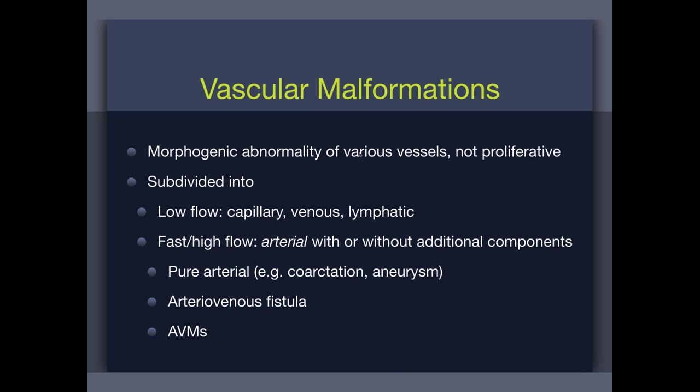AVMs are actually much rarer than venous and lymphatic malformations. In any given year at Seattle Children's, we see venous and lymphatic combined maybe 50 to 100 cases. AVMs, I can count on one hand, and they're usually big deals requiring multiple rounds of embolization or complex treatment. So if you're unsure, think twice about calling something an AVM because they just don't pop up every day. Venous and lymphatic malformations are much, much more common.